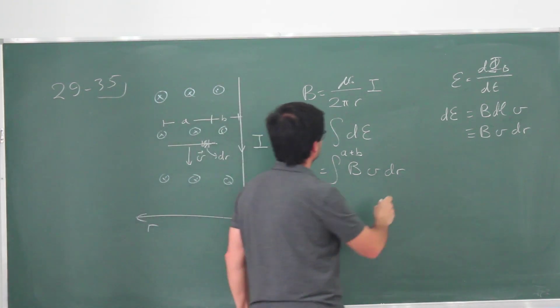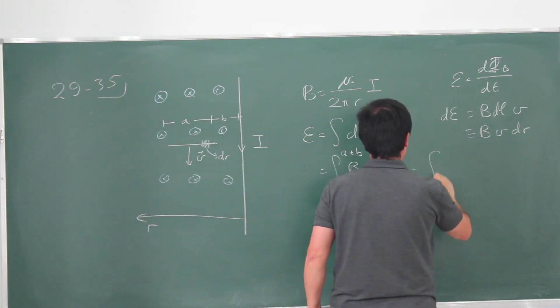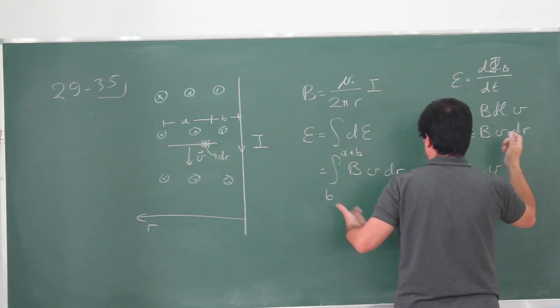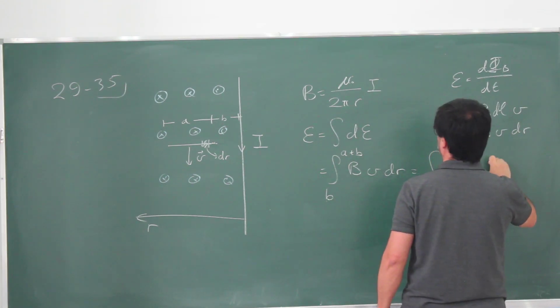I can write this down. This B, from B to A plus B, is μ₀/(2πr). There's an I here. So this is B and then some dr.